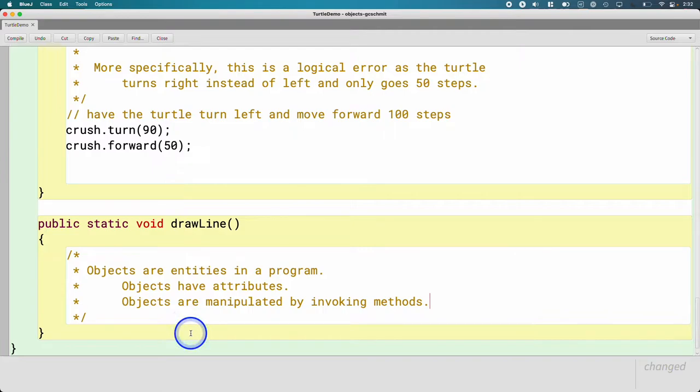In addition, objects are manipulated by invoking methods. In the case of turtles, we invoked methods like forward. And the turtle went forward a certain number of steps. Or turn left or turn right or pen up. Those are all different ways that we manipulated turtles by invoking methods.